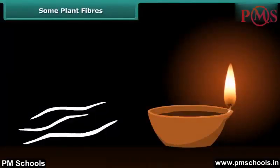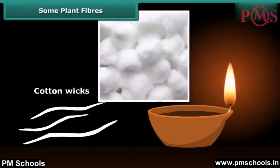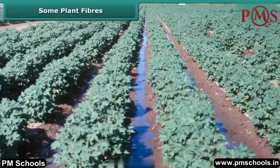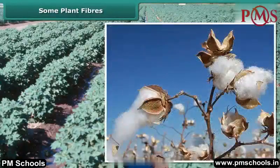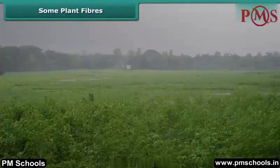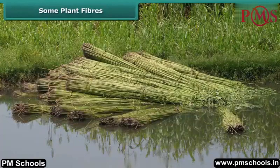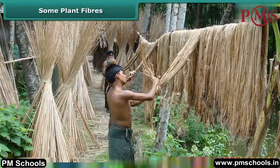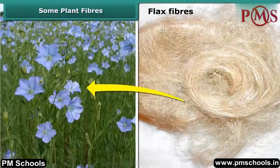Have you ever made wicks of earthen lamps during Diwali festival or other occasions? They are made up of cotton. This cotton is obtained from cotton plants, which are grown at places having black soil and warm climate. The fruits of the cotton plant, after maturing, burst open and seed-covered cotton is obtained. Jute fiber is obtained from the stem of the jute plant; it is cultivated during the rainy season. The stems of harvested plants are immersed in water for a few days, then the stems rot and fibers are separated by hand. Flax fibers are also obtained from the stems of the plant and are used mainly to make linen.